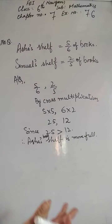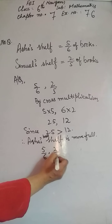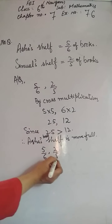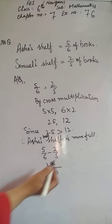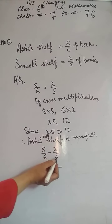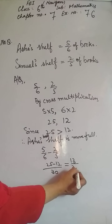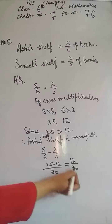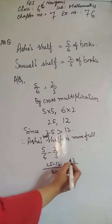Isme doosra part hai: by what fraction? Ab hum nikalenge kis fraction se. LCM of 6 and 5 is 30. Cross multiplication: 5×5=25 aur 6×2=12. Minus karenge kyunki hamein difference batani hai: 25 minus 12 = 13. Toh 13/30. Aisha's bookshelf is more full by 13/30.